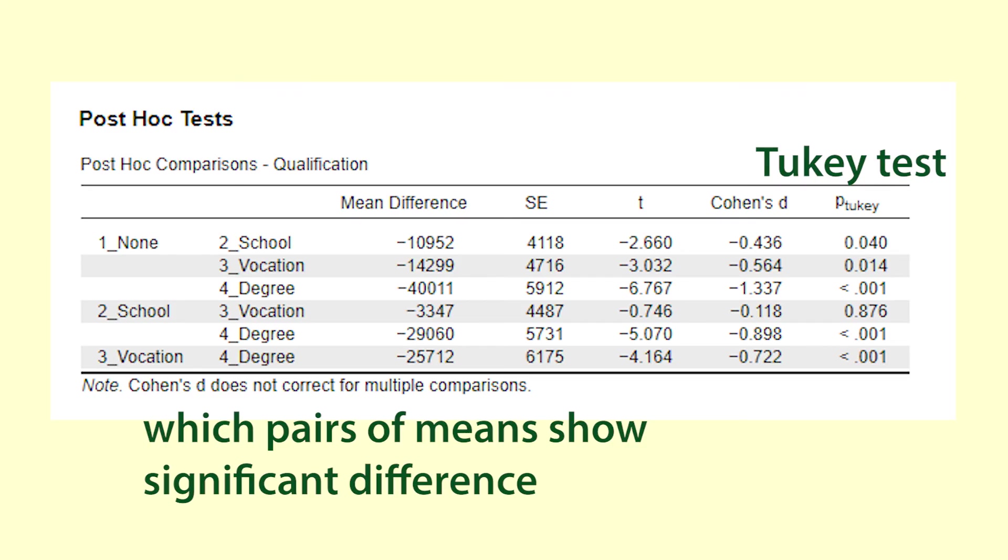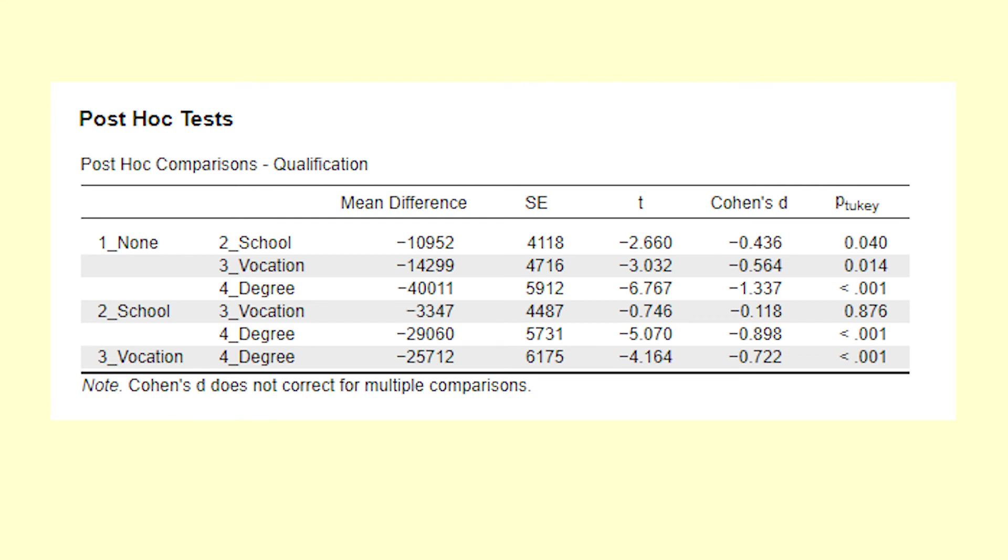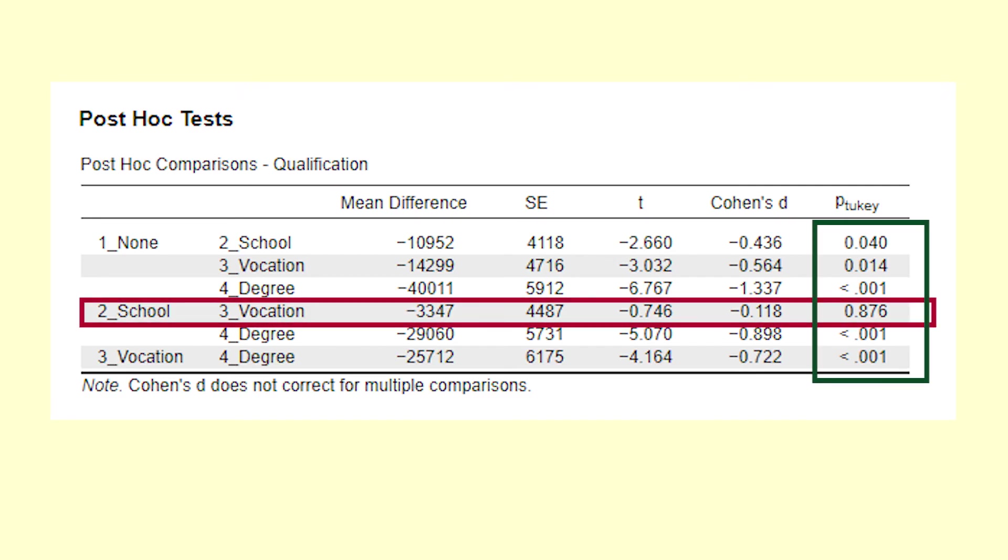Excel does not do this analysis but here is the output from JASP which is similar to what you would see from programs such as SPSS. This shows that all the pairs of means show statistically significant differences except for the groups for school and vocational qualification. These do not have evidence of having different means.